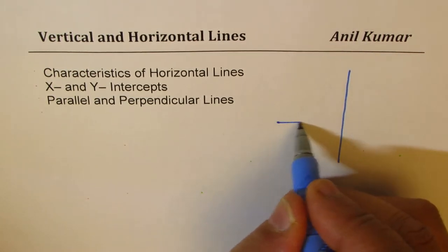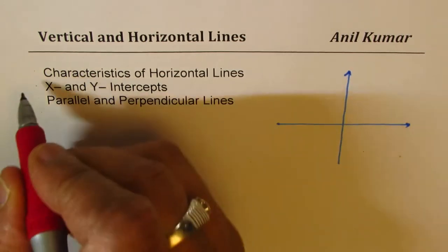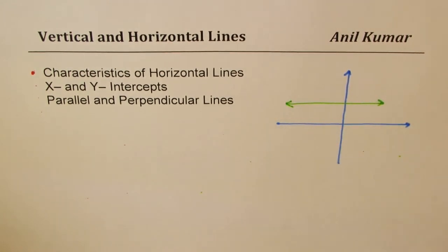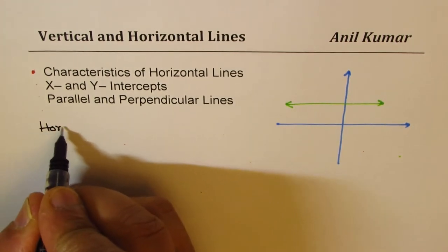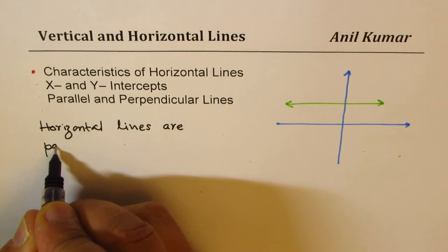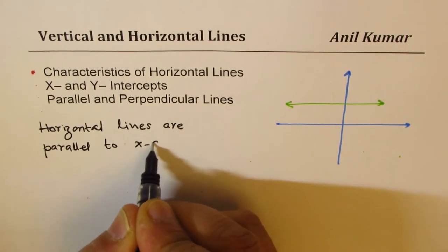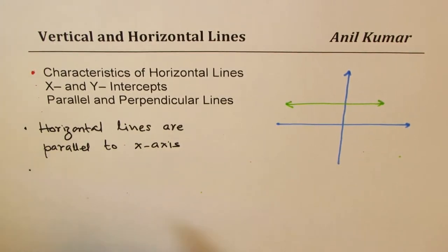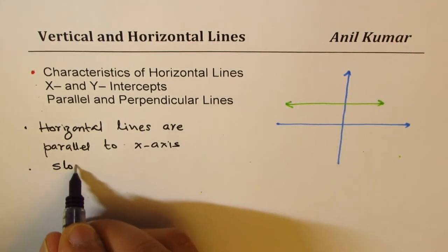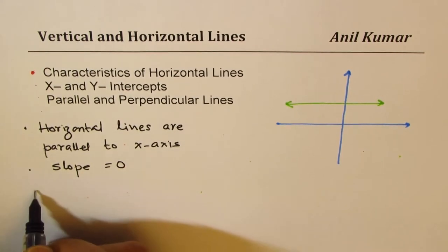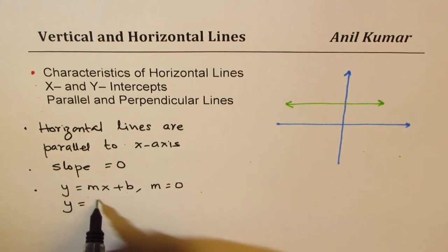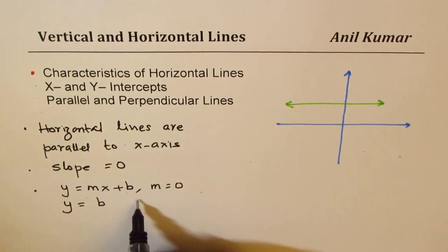Let's consider horizontal lines first. What are horizontal lines? Horizontal lines are parallel to the X axis. How can you write the equation of a horizontal line? Since they are horizontal, the slope is equal to 0. So if you consider the equation Y = MX + B, where M equals 0, we can write this as Y = B. That becomes the equation of a horizontal line.